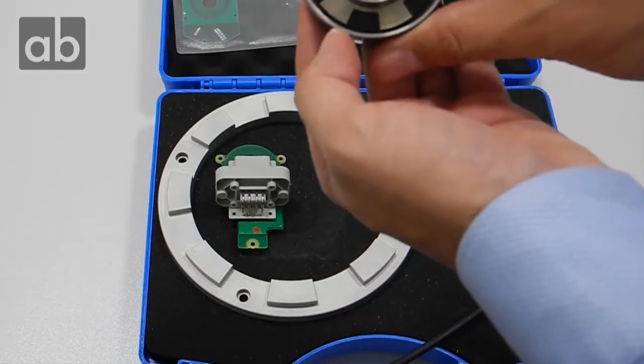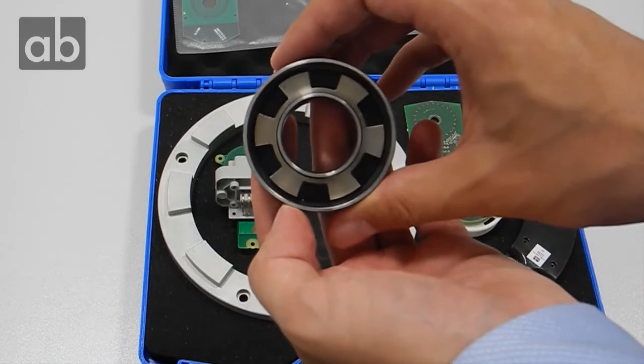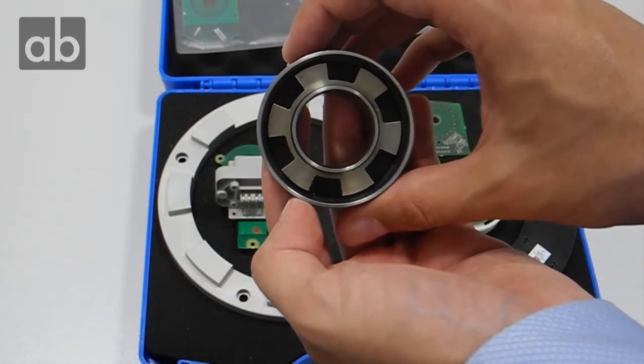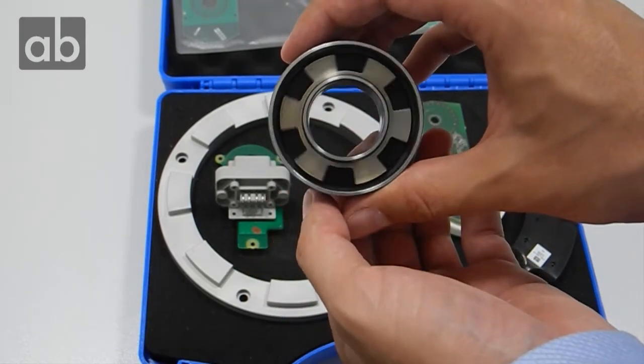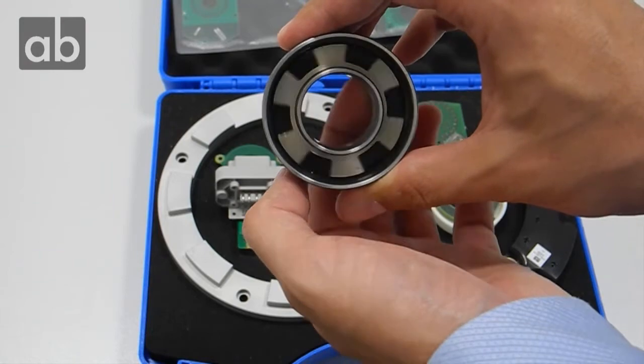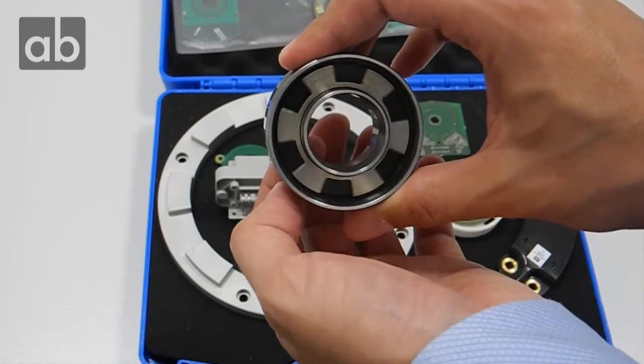Inside this bearing, you can see the target structure. The target structure, of course, rotates with the bearing itself. If I start to rotate the inner ring, you will see that the target is rotating as well.